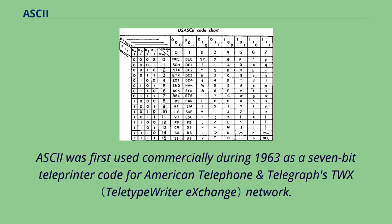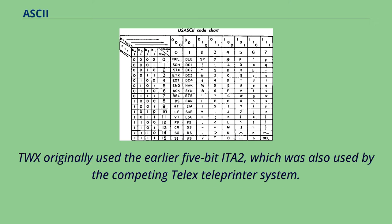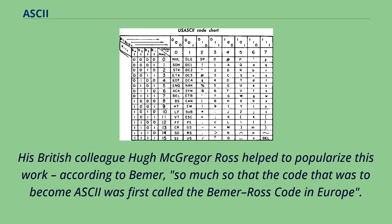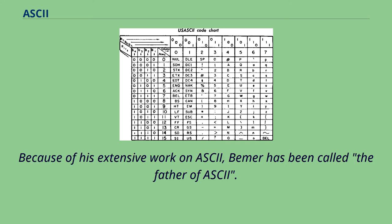ASCII was first used commercially during 1963 as a 7-bit teleprinter code for American Telephone and Telegraph's TWX network. TWX originally used the earlier 5-bit ITA-2, which was also used by the competing Telex teleprinter system. Bob Beamer introduced features such as the escape sequence. His British colleague Hugh McGregor Ross helped to popularize this work, so much so that the code that was to become ASCII was first called the Beamer-Ross code in Europe. Because of his extensive work on ASCII, Beamer has been called the father of ASCII.